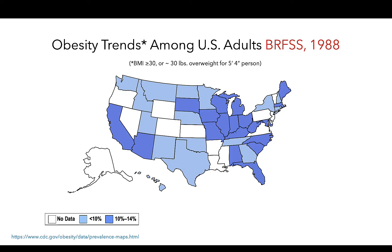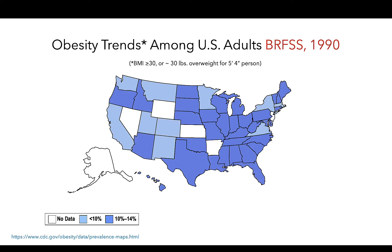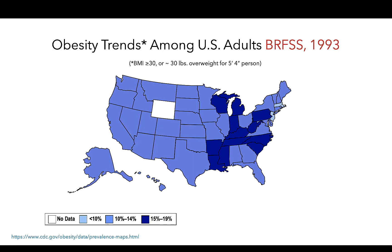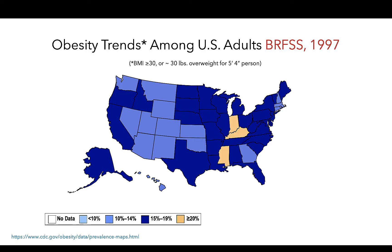In 1988, we see more data as well as more darker blue states. 1989 shows a similar trend as well as 1990. And in 1991, we have a whole new classification with some states reporting 15 to 19% of adults with a BMI classified as obese. Now as we advance through the 90s, we see additional darkening and additional data as we see more and more states reporting 15 to 19% and now even some states with more than 20% of adults with a BMI classified as obese.